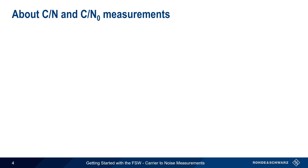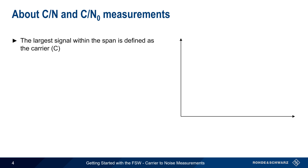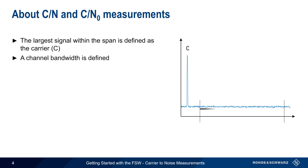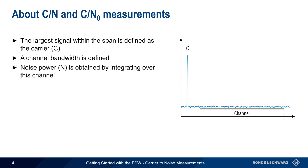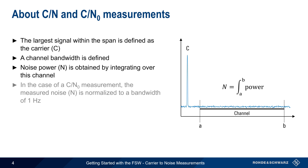When making a Carrier-to-Noise Measurement, the largest signal within the spectrum analyzer span is defined as a carrier with power C. A channel bandwidth must be defined, and the noise power, N, is then obtained by essentially integrating between the channel limits. In the case of a Carrier-to-Noise Density Measurement, the noise power measured within the channel is normalized to a 1 Hz bandwidth.